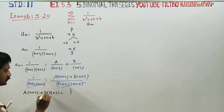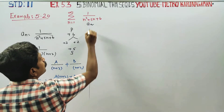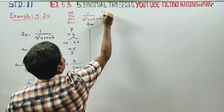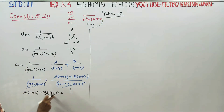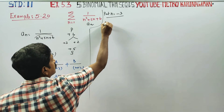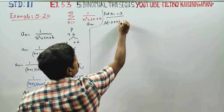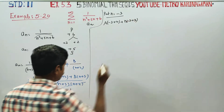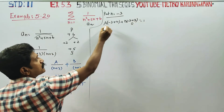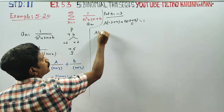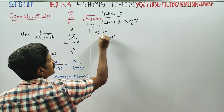Put n equal to minus 3. Then a into (minus 3 plus 2) plus b into (minus 3 plus 3) equals 1. The b term becomes 0, so a into minus 1 equals 1. Therefore, a is equal to minus 1.